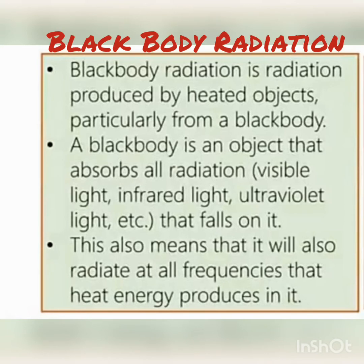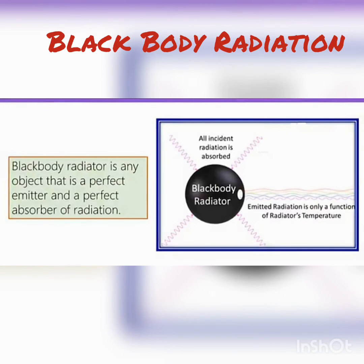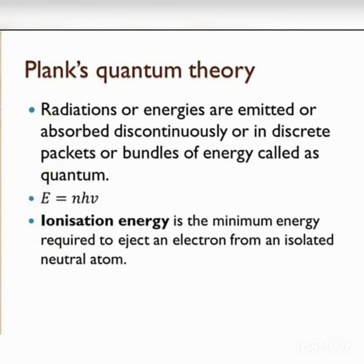Some observations were not explained properly by the wave nature of electromagnetic radiation, which established its particle nature. Black body radiation: the ideal body which emits and absorbs all frequencies is called a black body, and the radiation emitted by such a body is called black body radiation. Max Planck suggested that atoms and molecules could emit or absorb energy only in discrete quantities or small packets, not in a continuous manner. Planck gave the name quantum to the smallest quantity of energy emitted or absorbed as electromagnetic radiation. The energy of a quantum is proportional to its frequency: E = hν, where h is Planck's constant.